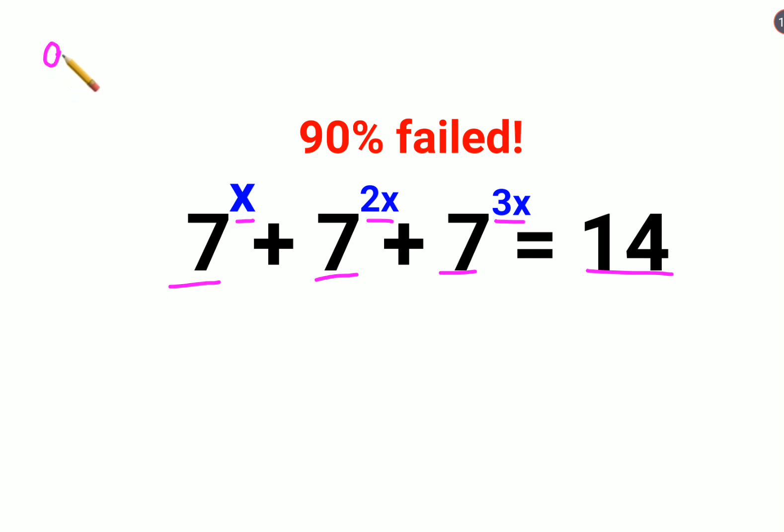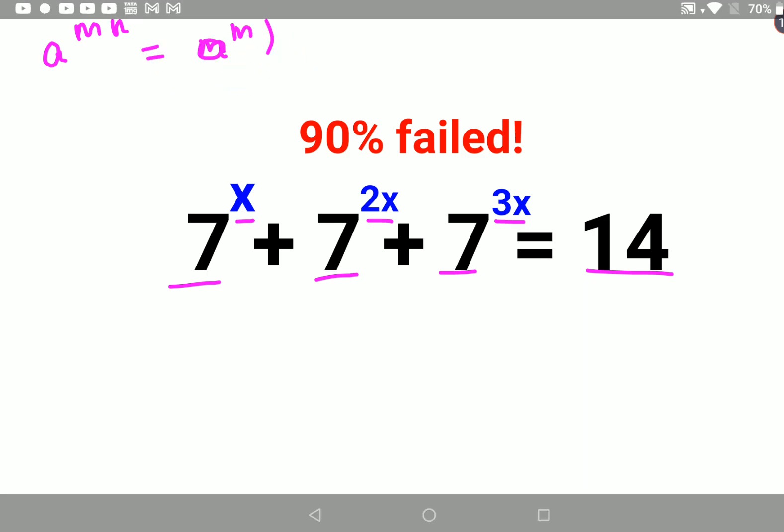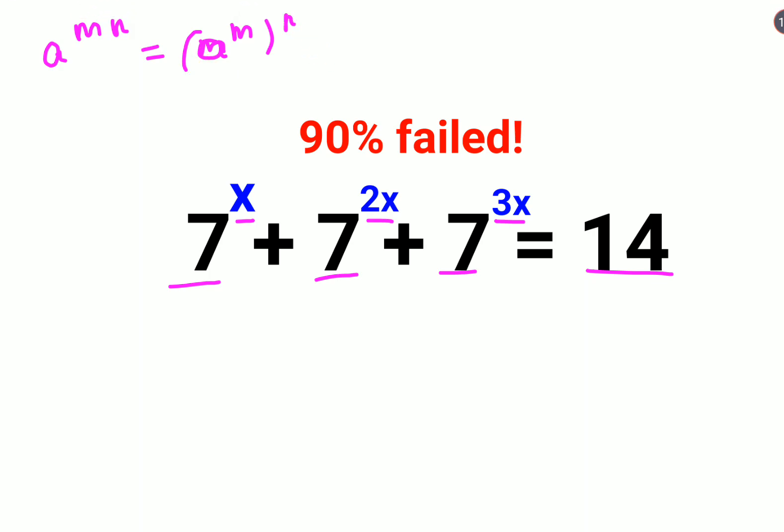Understand a raised to m times n can be written as a raised to m the whole raised to n or it can also be written as a raised to n the whole raised to m. So here I can write this 7 raised to x plus 7 raised to x the whole square plus 7 raised to x the whole cube equals to 14.